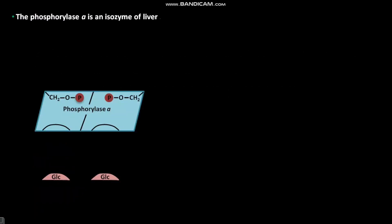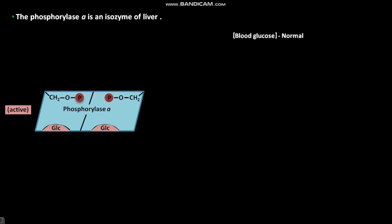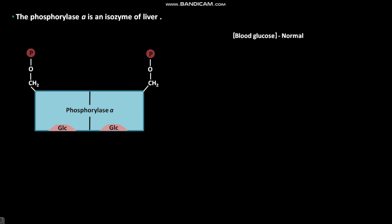Phosphorylase A is an isozyme of the liver. Active Phosphorylase A has empty allosteric sites. When blood glucose concentration is normal, glucose molecules bind to these empty allosteric sites in active Phosphorylase A. This binding induces a conformational change in active Phosphorylase A.